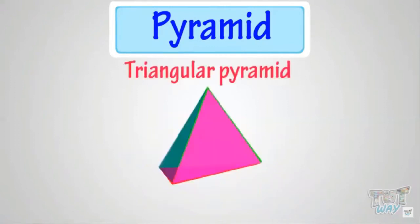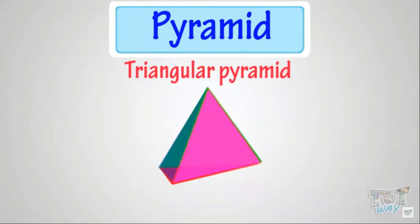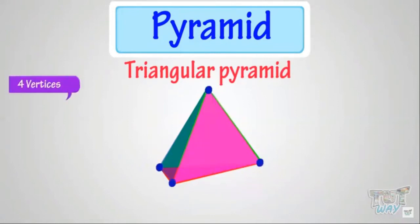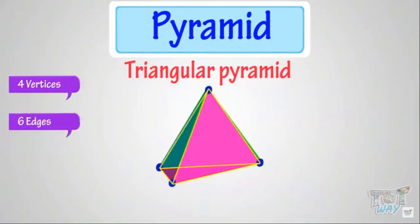This is a triangular pyramid because its base is a triangle and all other faces are triangular and converge to a single point. It has four vertices, six edges, and four faces.